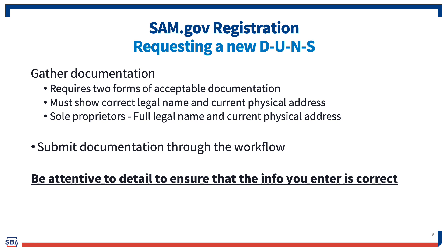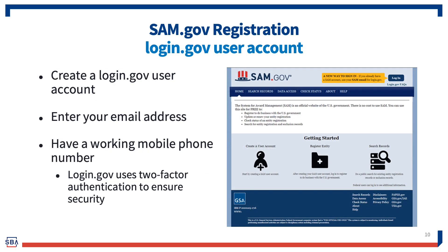The next step in the SAM registration process is creating a login.gov user account. Login.gov provides secure and private online access to multiple government services and applications. With a login.gov account, you can sign into multiple government websites with the same username and password. You can create your account from the SAM.gov website by selecting login and then create an account. During the process, you'll provide your email address, create a password, and provide a mobile phone number. Login.gov uses two-factor authentication and provides six-digit codes via text message to authenticate the individual logging in for improved account security.